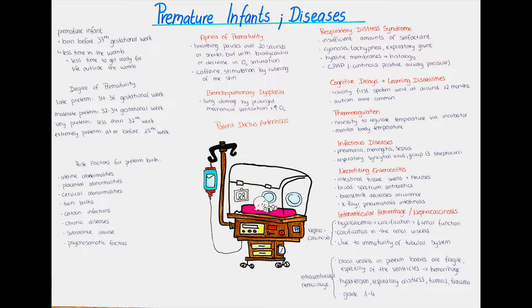Apnea of prematurity is something often seen in preterm newborns, and it refers to the newborn having breathing pauses that last longer than 20 seconds. It can also be categorized as apnea of prematurity if the breathing pauses are shorter than 15 seconds, but the newborn also experiences relative bradycardia and/or reduced oxygen saturation — so a slowed heart rate in relation to the normal heart rate.